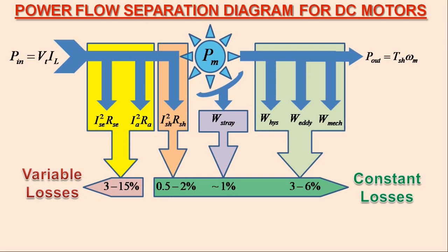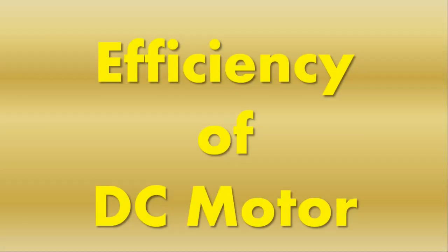In the first partition of the power flow separation diagram, the net electrical power available for energy conversion is obtained after subtracting the electrical losses from the input electrical power supplied to the DC motor. In the second partition, the net mechanical output power is obtained after subtracting the rotational losses from the mechanical power developed by the armature of the DC motor.